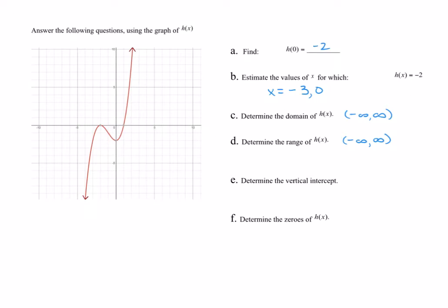For part b, we want to estimate the values of x for which h of x equals negative 2. That means my y is negative 2 — we are looking along this line. So we have one at negative 3 and also 0. Our domain, since it is a polynomial, is negative infinity to infinity. Our range, because this is an odd degree polynomial, is negative infinity to infinity — it goes forever down and forever up. The vertical intercept, in point form, is (0, negative 2), and the zeros are negative 2 and 1.